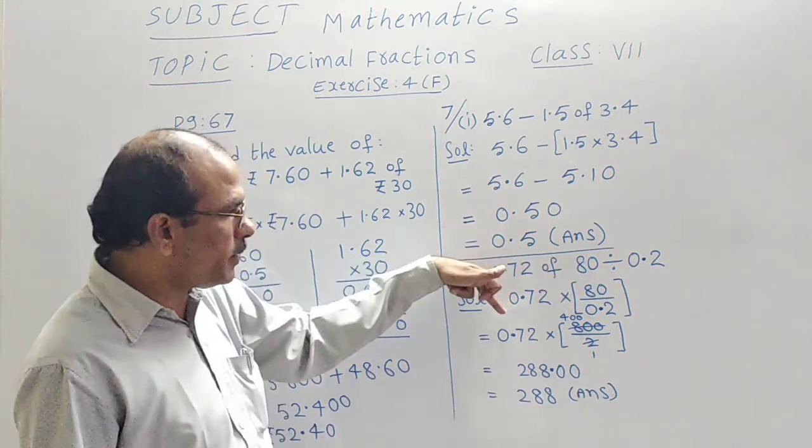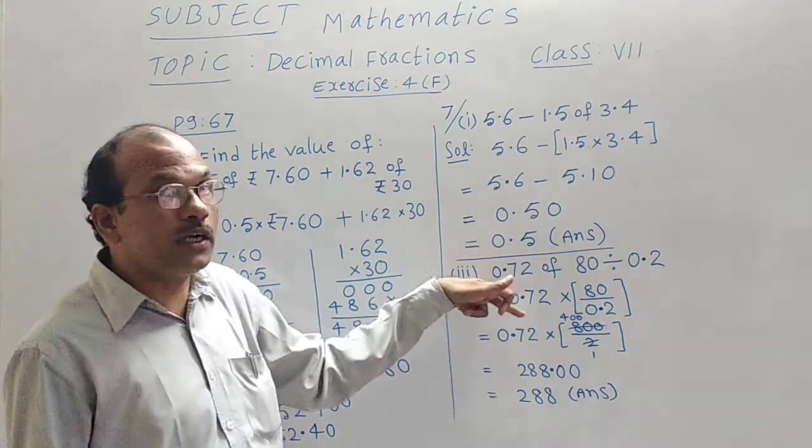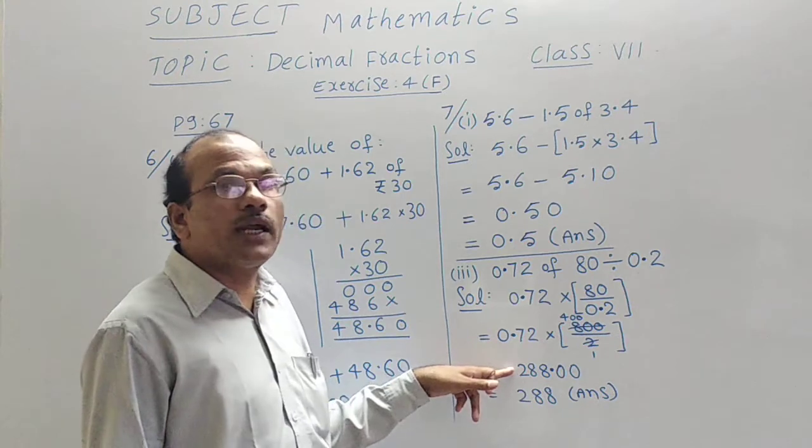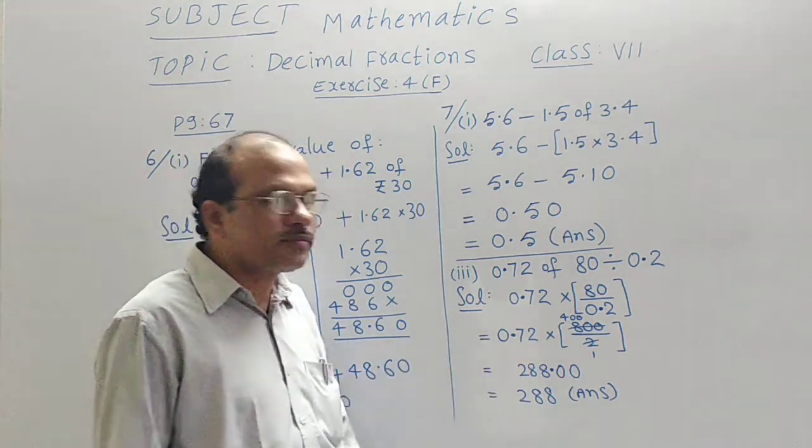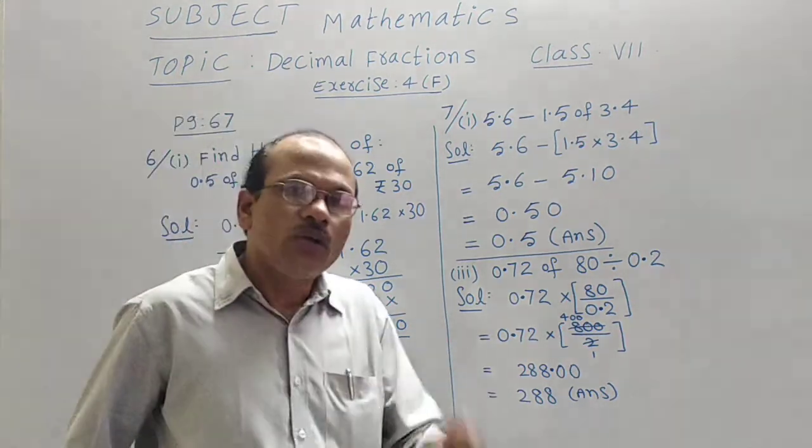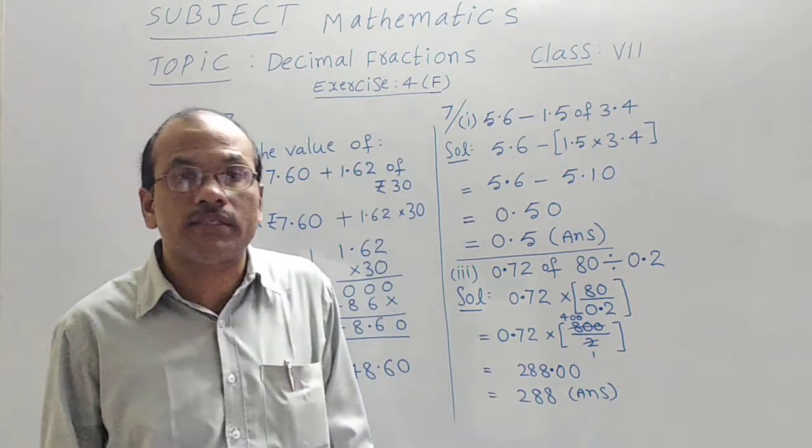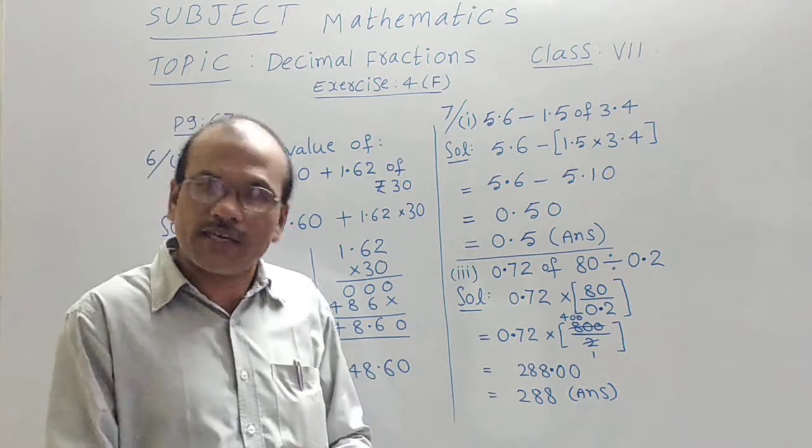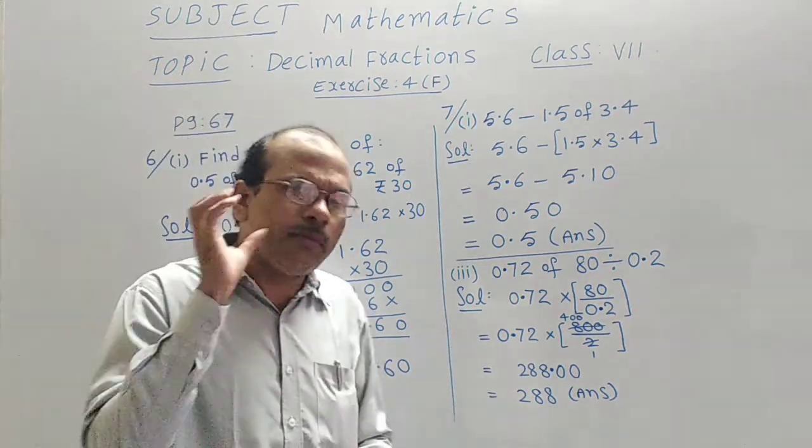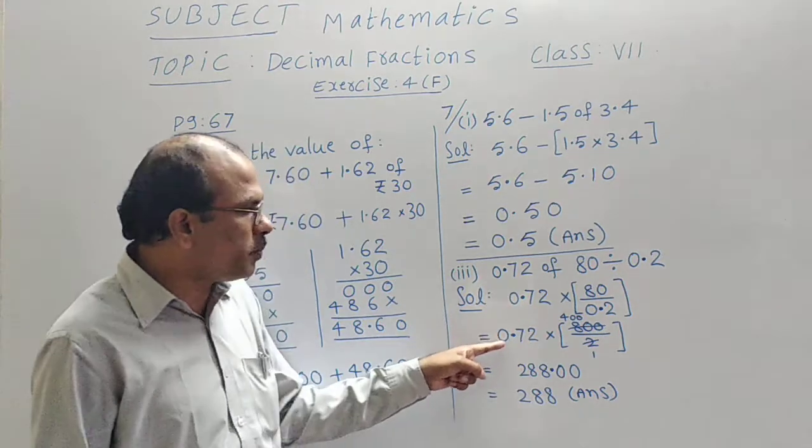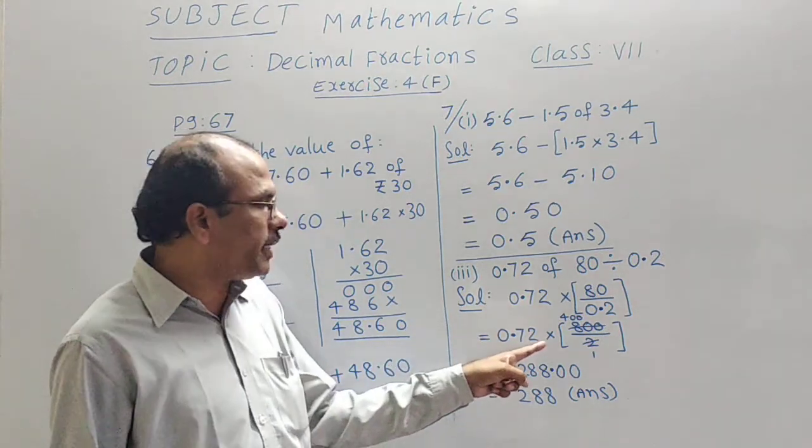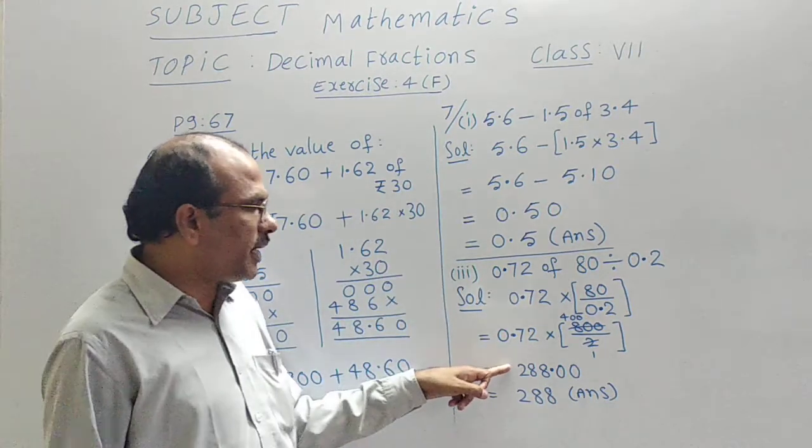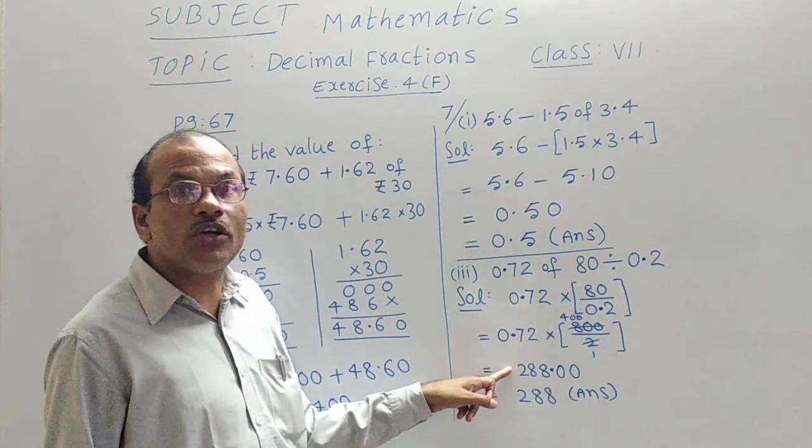400 should multiply with 0.72 in the rough. You will get an answer called 288.00. We have already learned in the previous exercises the multiplication of decimal fractions or the decimal numbers. Same like that only we should multiply these two. Then we will get an answer 288.00.